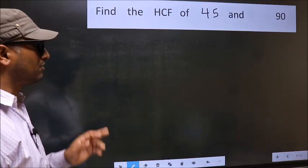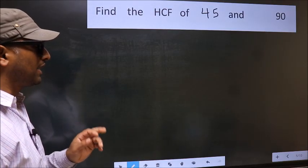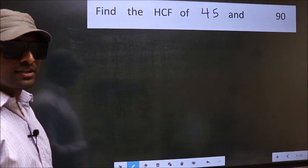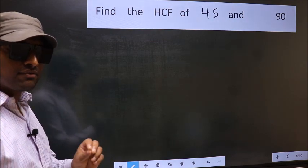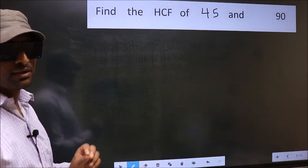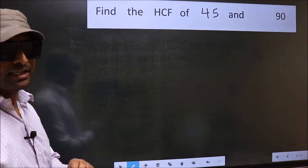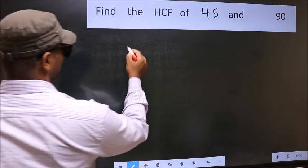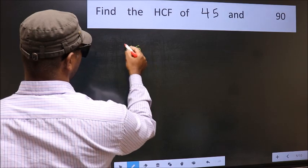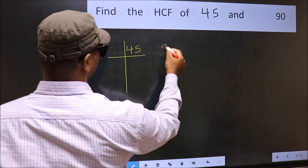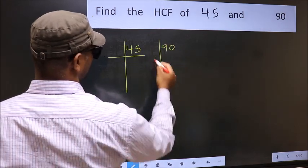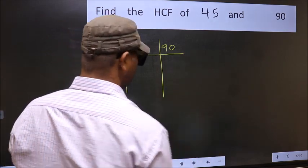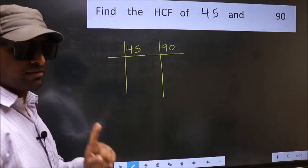Find the HCF of 45 and 90. To find the HCF, we should do the prime factorization of each number separately. That means we factorize 45 and 90. This is Step 1.